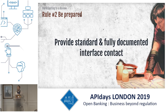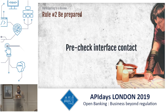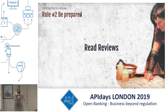For the written review, please provide a fully documented API contract using the relevant API description format — not some Excel or Word files. In order to avoid everyone losing their time, please pre-check the interface contract using the guidelines or a linter provided by the reviewers. And finally, read the written reviews to prepare answers and fix what can be fixed before the live review.